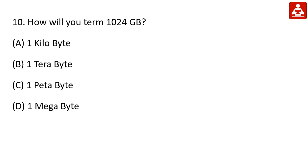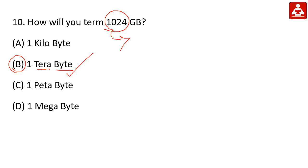How will you term 1024 GB? 1 TB is 1024 GB. Option B is the right answer: 1 TB. Also, 1024 MB is 1 GB.